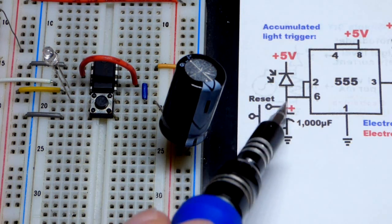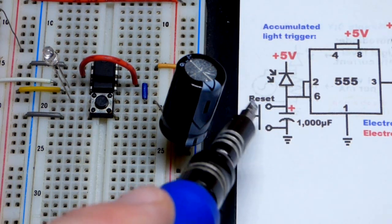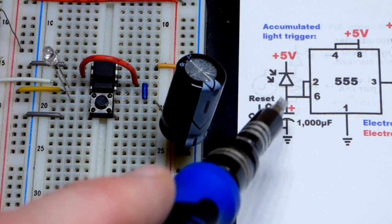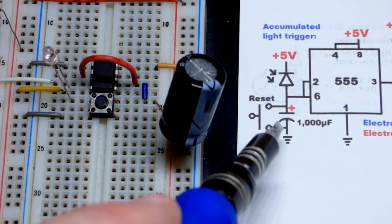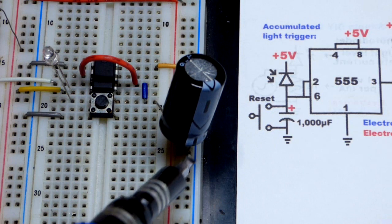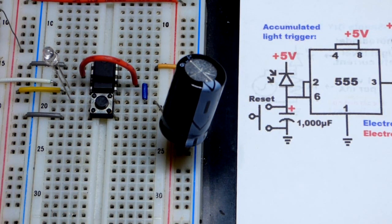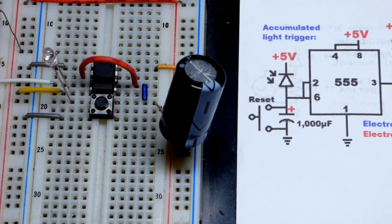That's what I'm gonna name it - the reset button. We close that, we have a direct connection to ground. That instantly discharges the capacitor. There's ground on both sides, that's how that works.